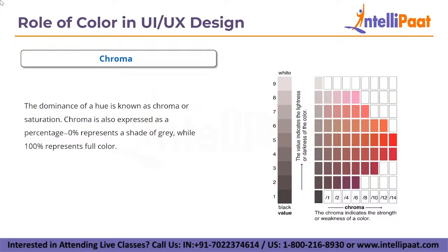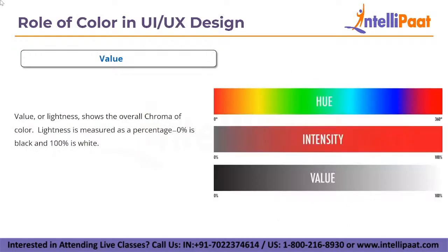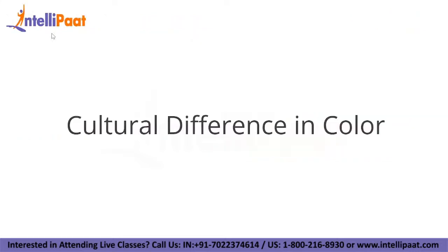Chroma, also known as saturation, refers to the dominance of hue and is expressed as a percentage: 0% represents shades of gray while 100% represents full color. Value, or lightness, shows the overall lightness of a color and is also measured as a percentage — 0% is black and 100% is white.